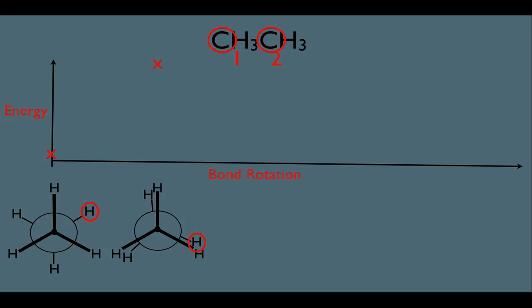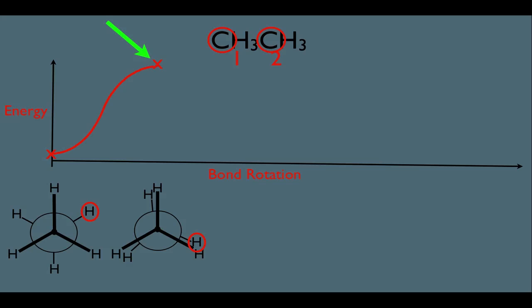Here's what's great about this particular method in conformational analysis. You could connect the dots between these two points on the graph. What you would be doing, basically, is representing the energy level of all the conformations between these two structures. Notice, as we start to rotate the bond, the energy of the molecule increases because it's adopting a higher energy eclipsed conformation. You could technically say what we're looking at are two extremes. But let's continue this analysis.